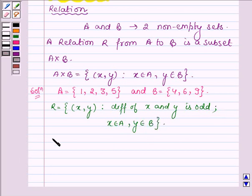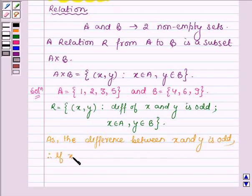Now as the difference between x and y is odd, therefore if x is odd then y is even, and if y is odd then x should be even, vice versa.